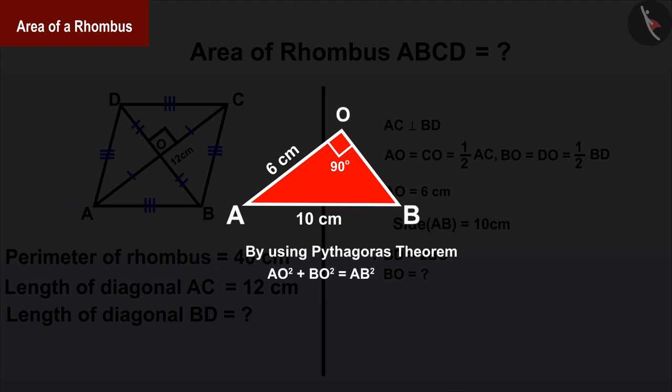Solve the equation by substituting the values of AO and AB. We get the value of BO as 8 centimeters.